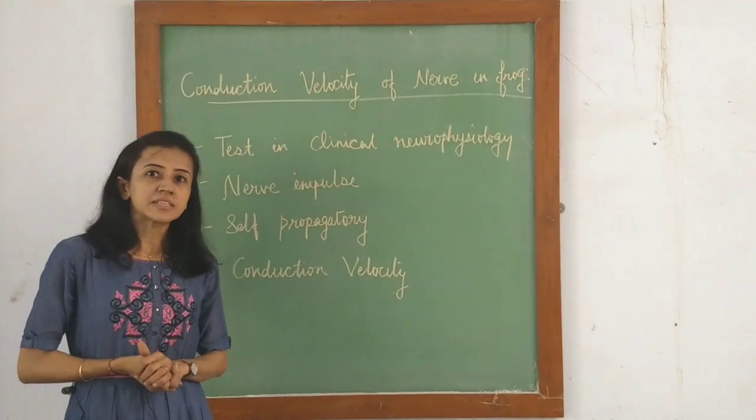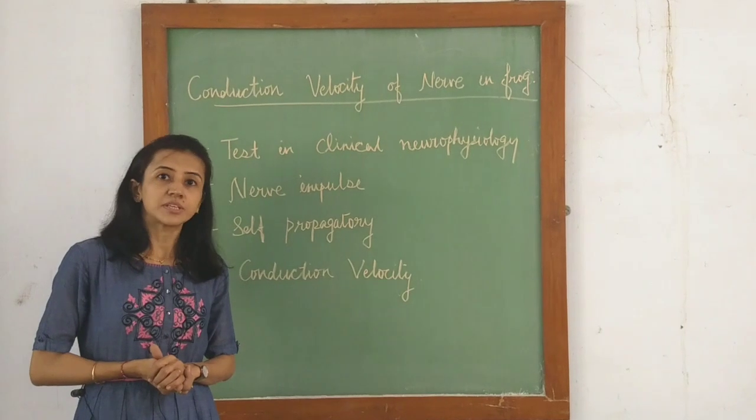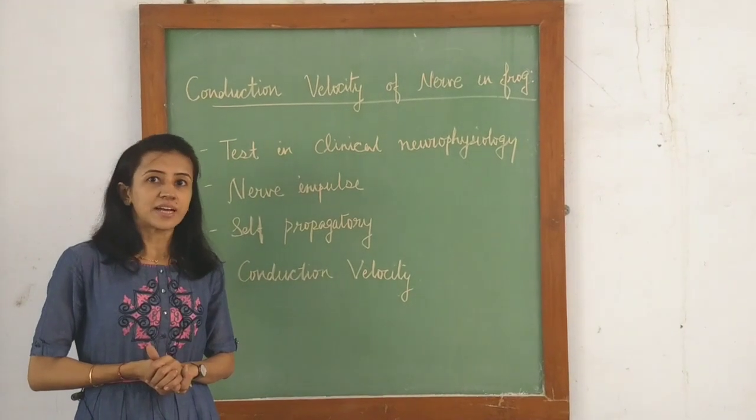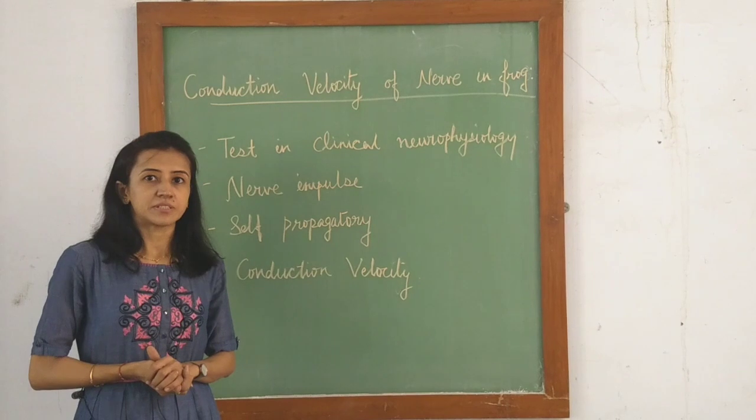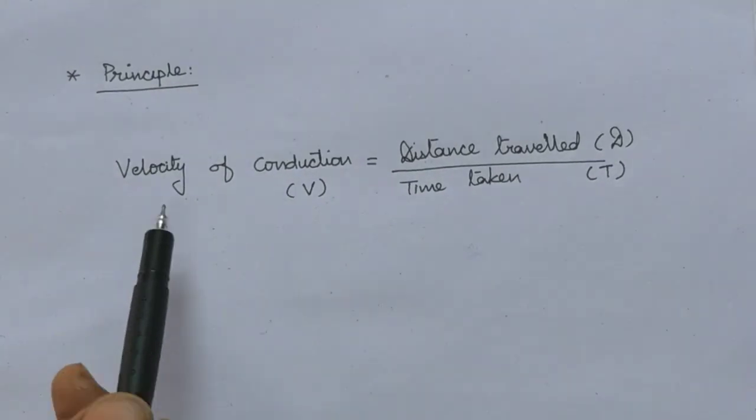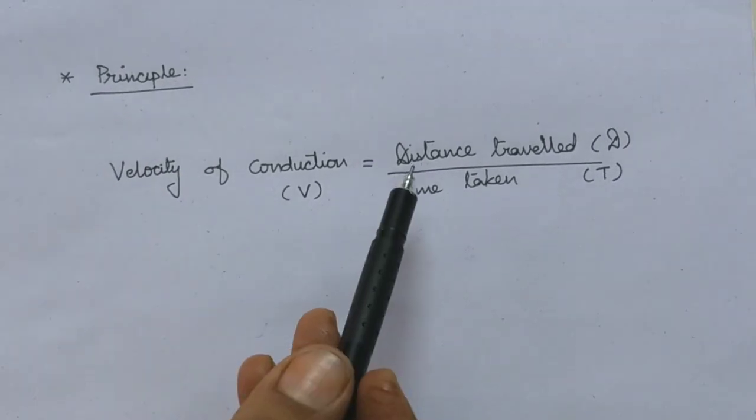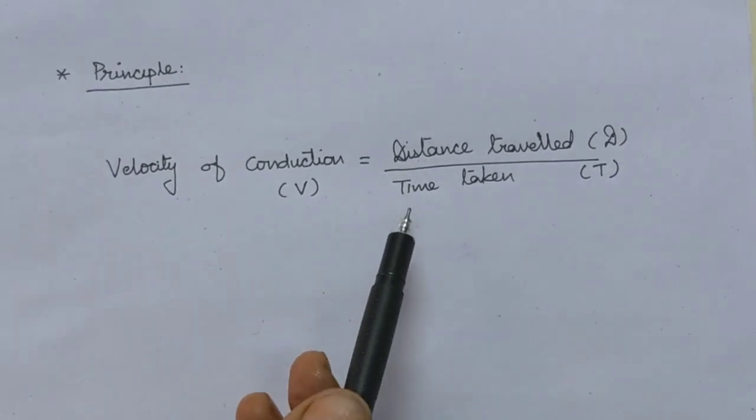Here we determine conduction velocity of sciatic nerve, for which we use sciatic nerve and gastrocnemius muscle preparation. Let us start with principle. Velocity of conduction is determined by dividing the distance traveled with the time taken.